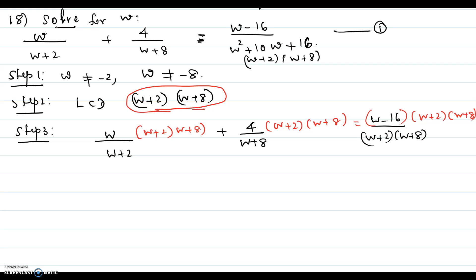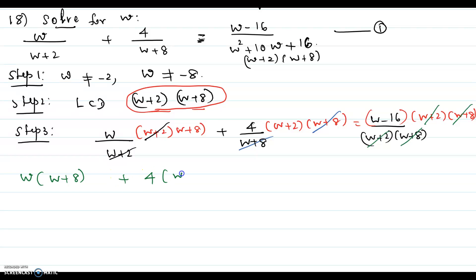Now we want to cross out the common factors. W plus 2 gets crossed out in the first term. W plus 8 gets crossed out in the second term. Both w plus 2 and w plus 8 get crossed out in the third term. So now you are left with w times w plus 8 plus 4 times w plus 2 equals w minus 16.